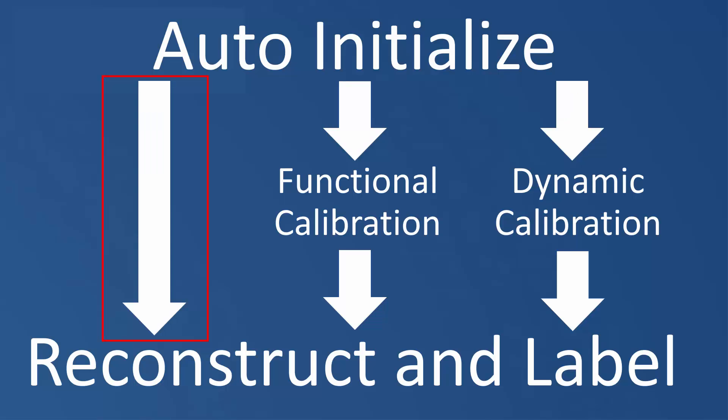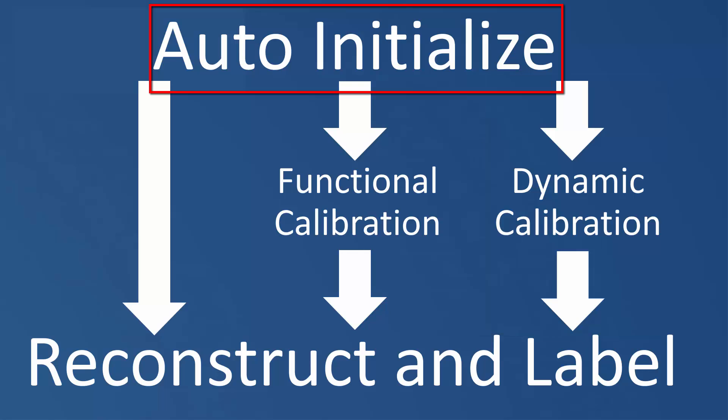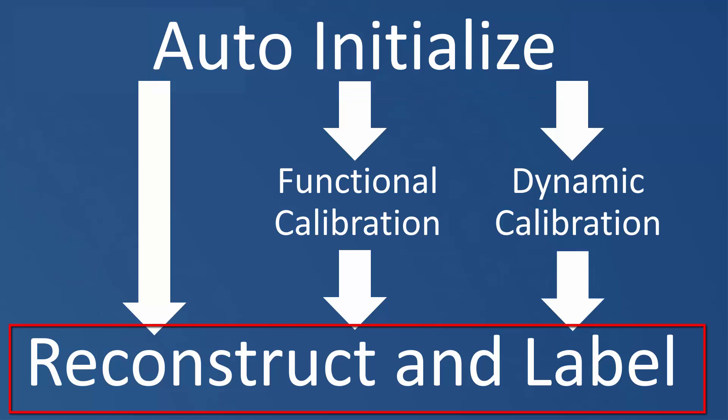The remainder of this video will be split up into three sections. The first workflow is where we will be using the static calibration, which we have just completed, to auto label a trial with a small range of motion. In the second workflow, we will be performing a functional range of motion calibration, and then using the functional calibration to auto label a dynamic trial with a larger range of motion. And in the third workflow, we will be using a dynamic trial as our functional calibration. I'm now going to use the static calibration that we performed in the previous step to reconstruct and label a dynamic trial with a small range of motion.